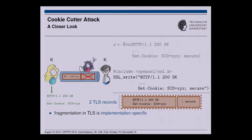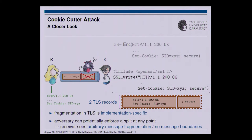The important point is that this fragmentation in TLS is actually implementation-specific. Any library might do that fragmentation up to certain boundaries in its own way. This means an adversary can potentially enforce this split at any point of the message sent, so the receiver will not see messages anymore but fragments of messages, with no clear message boundaries preserved.